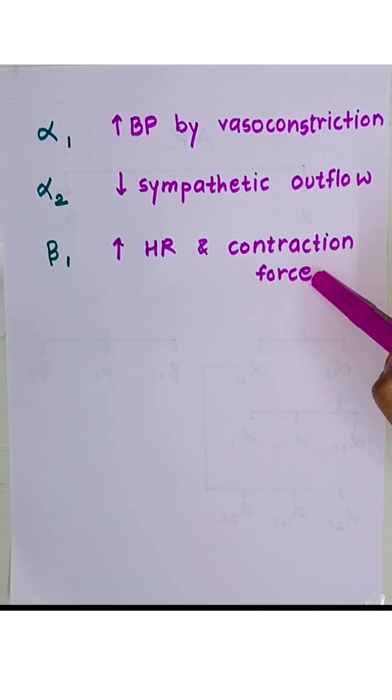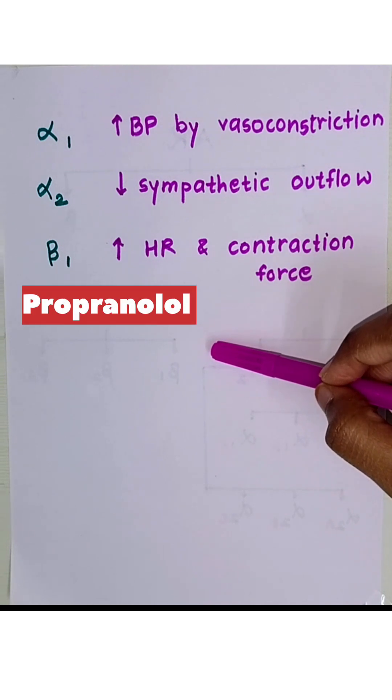That is why beta blockers like propranolol are used to slow the heart rate.